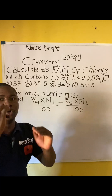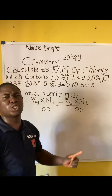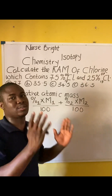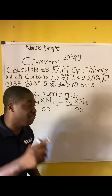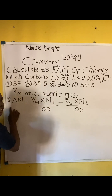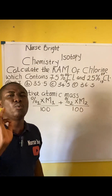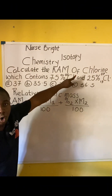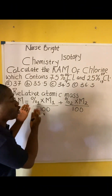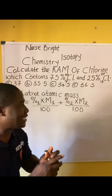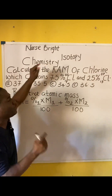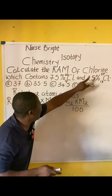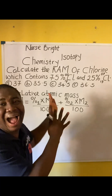At the end of solving this question I'm going to give you a practice question so you can master this aspect properly. The question is asking us to calculate the RAM — relative atomic mass — of chlorine. Note the formula I just gave you. This question on relative atomic mass is dealing with percentages.